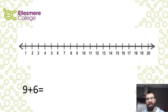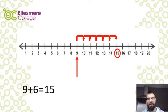So we start by finding nine and then this time we're counting on six. One, two, three, four, five, six and we should arrive at our answer. So we know now that nine add six equals fifteen. Let's check that. Correct.